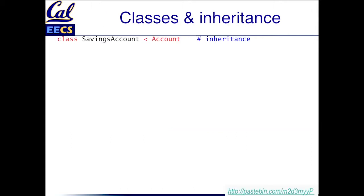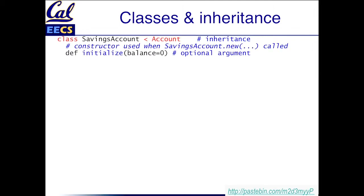I'm going to define a SavingsAccount and hypothetically say that it inherits from an existing class called Account, although we don't have an existing class — I just wanted to show the syntax for inheritance. Of course I need a constructor, and in Ruby the constructor for a class by default is called initialize. Why is it called initialize but you call it with new? It's just the way the world is.